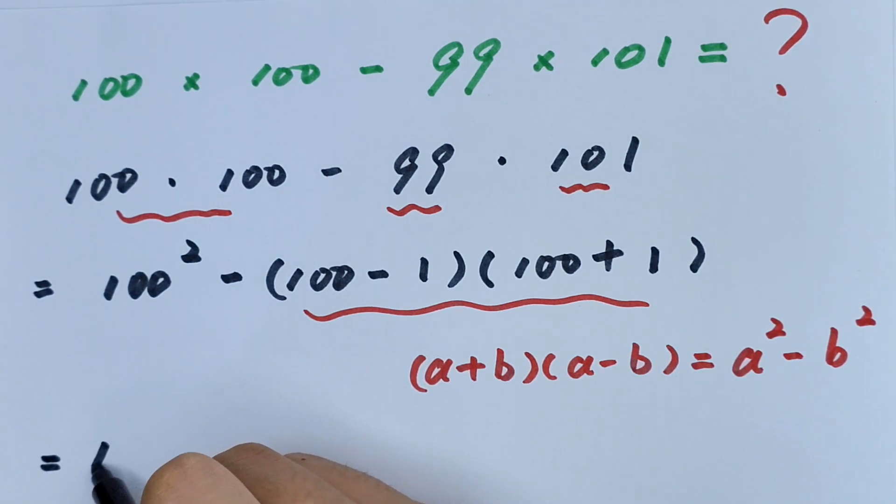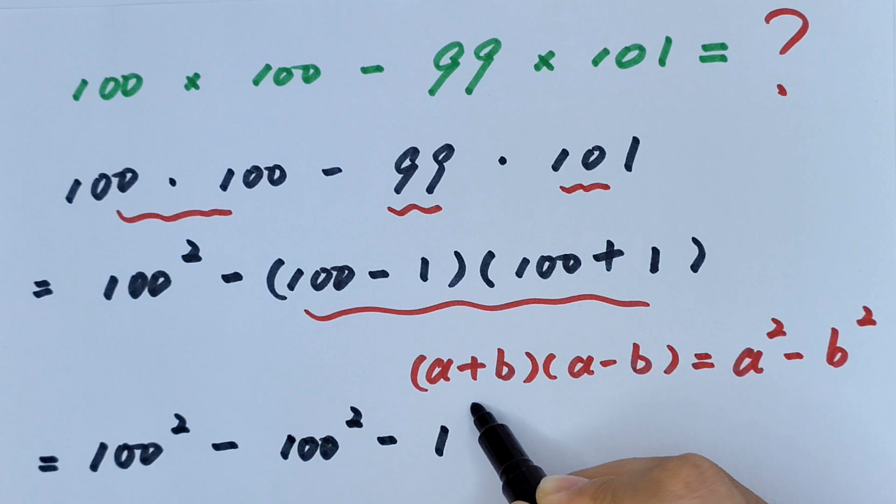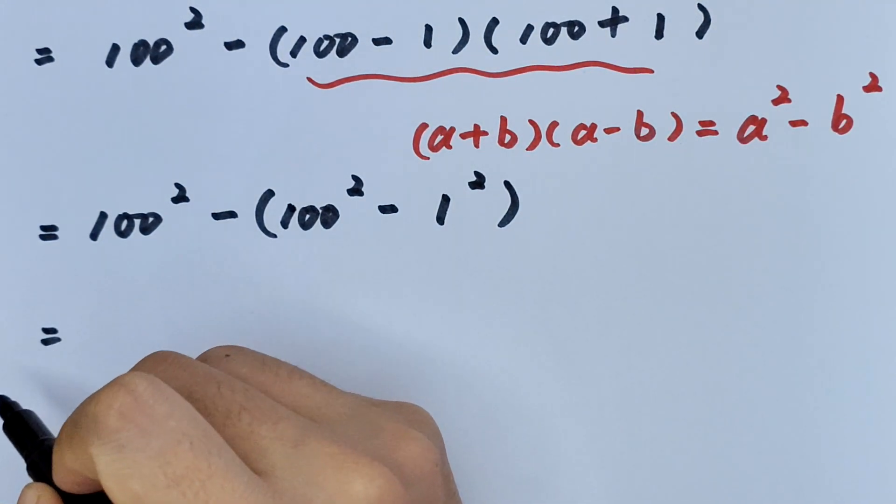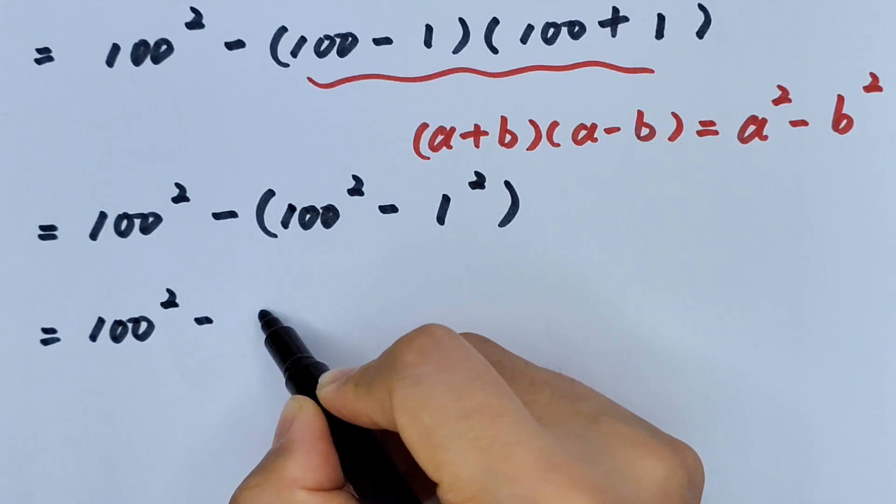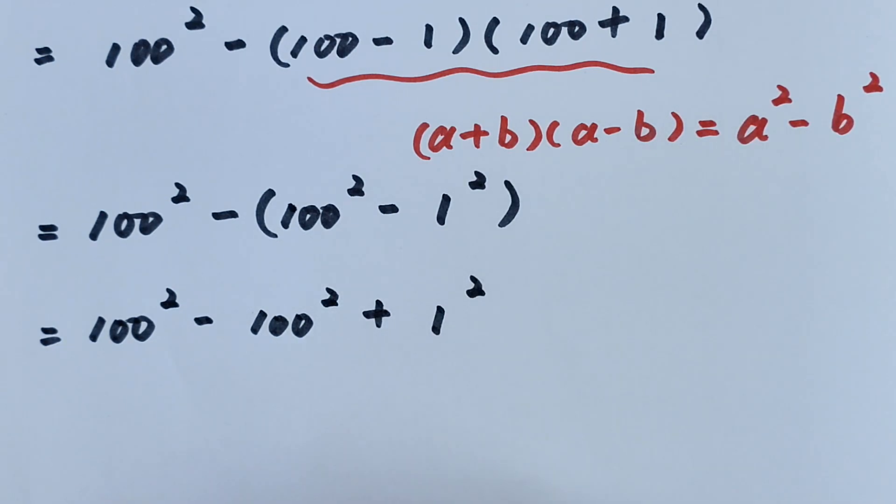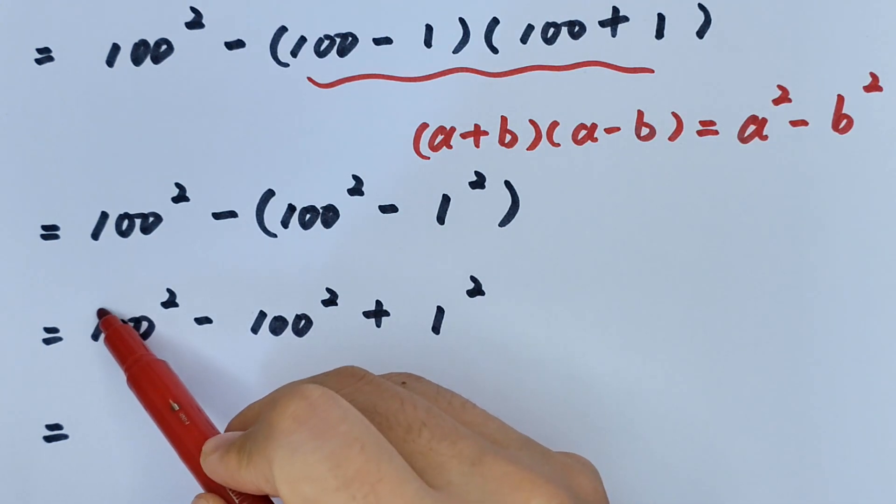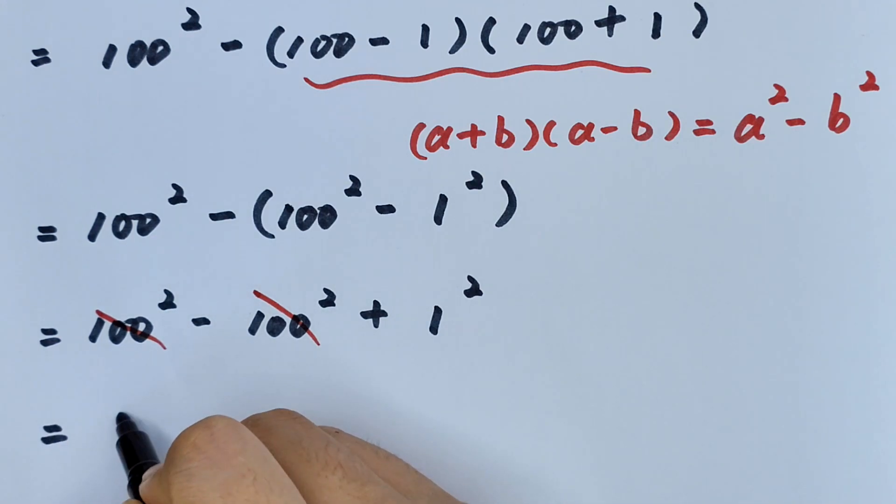So it will be 100 squared minus 100 squared minus 1 squared in brackets. Then we open the bracket. 100 squared minus 100 squared plus 1 squared equals, this minus this is 0, so it will be equal to 1 squared is 1.